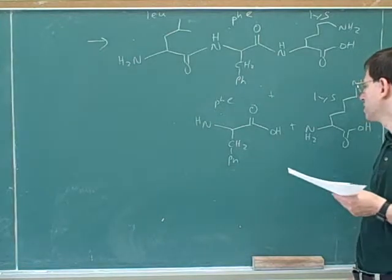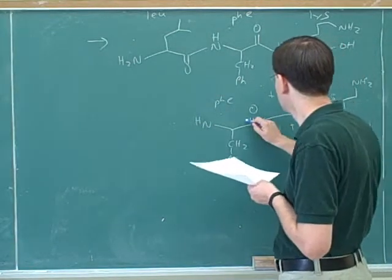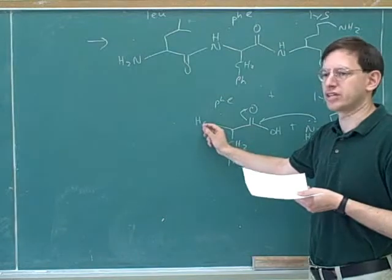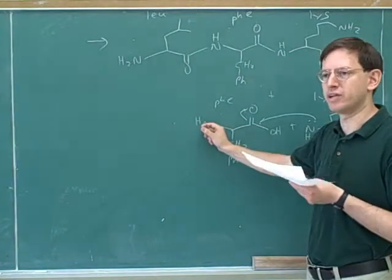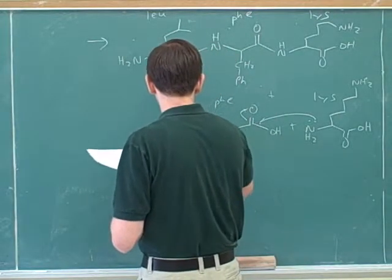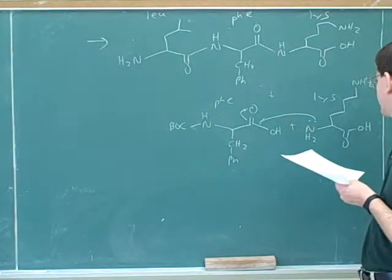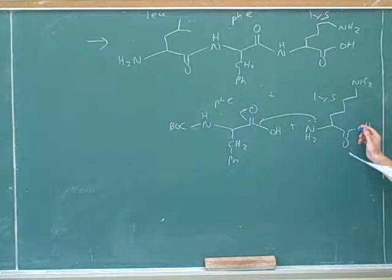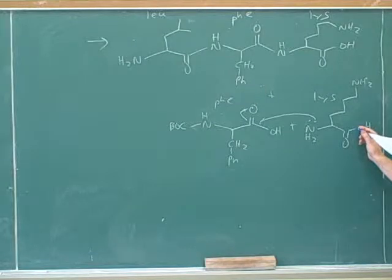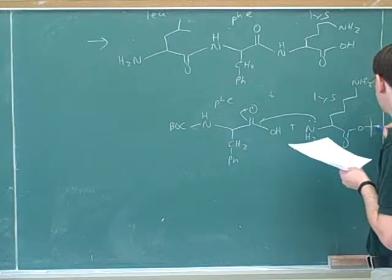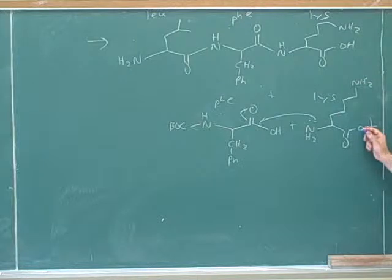Now they need to protect the relevant groups. What they want is for the nitrogen to attack the carboxy group. So the first thing is to protect that nitrogen so it doesn't become nucleophilic — and one way to do that is with BOC. So they added BOC here. They also have to protect the carboxy group on lysine so one lysine's nitrogen doesn't attack another lysine's carboxy — and they used a tert-butyl group for that.